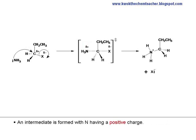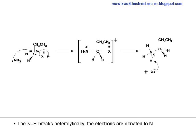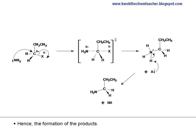An intermediate is formed with N having a positive charge. X minus then attacks the H of the N-H bond. The N-H bond breaks heterolytically. The electrons from the bond are donated to nitrogen. Hence the formation of the product.